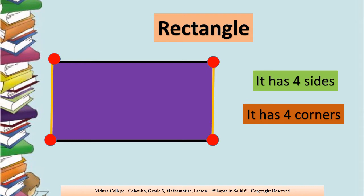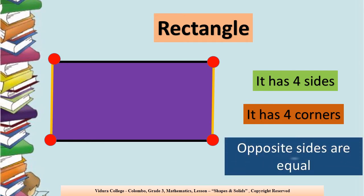You learned that in the square all the sides are the same or equal. But in a rectangle, opposite sides are equal. Can you see the yellow lines and black lines? These are the opposite sides. So we can say opposite sides are equal in a rectangle.